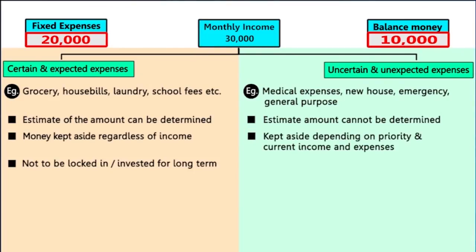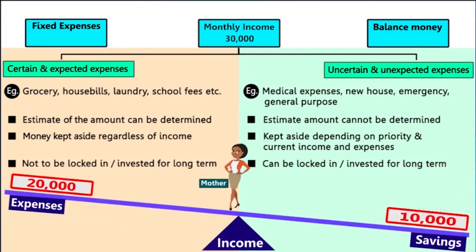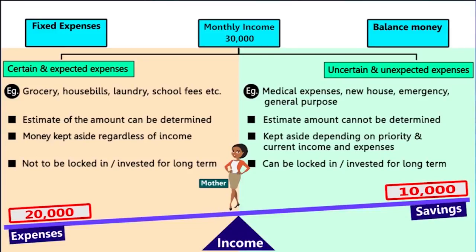These are usually kept aside depending on priority and current income, so it's not always necessary that the entire amount would be spent — rather, a part can be invested for a longer period. In this manner, our mom manages all regular expenses as well as saves some amount from the income. We salute moms all over the world! By observing how she manages the family budget, we can definitely learn something important from her.